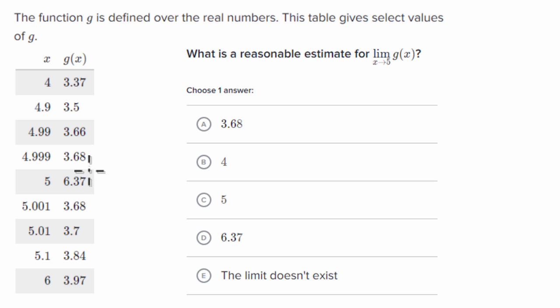but then at five, all of a sudden, it looks like we're kind of jumping to 6.37. And once again, I'm making an inference here. These are just sample points of this function. We don't know exactly what the function is.